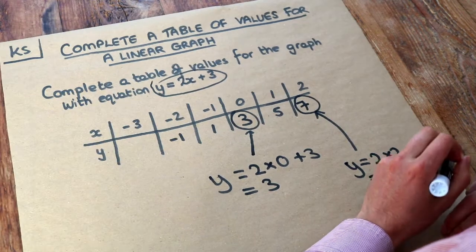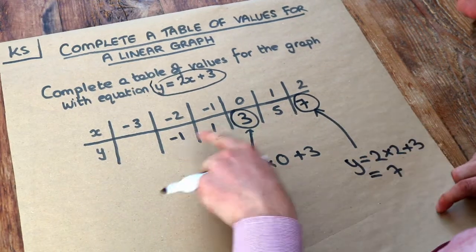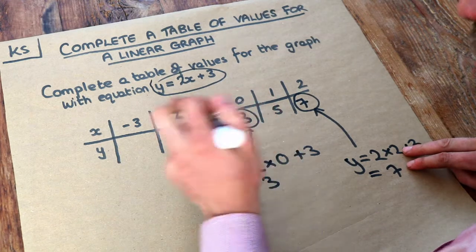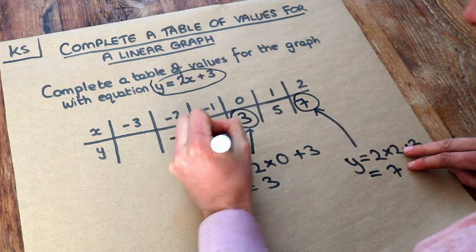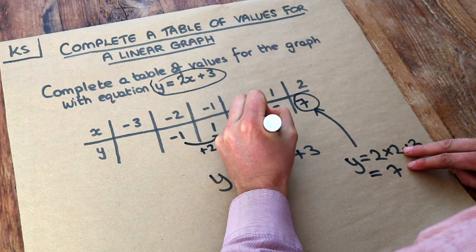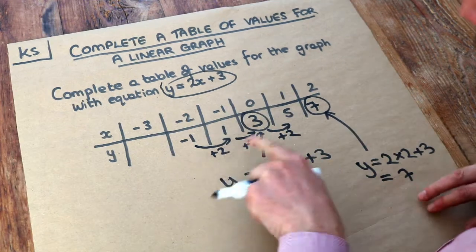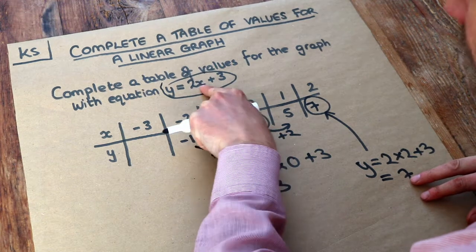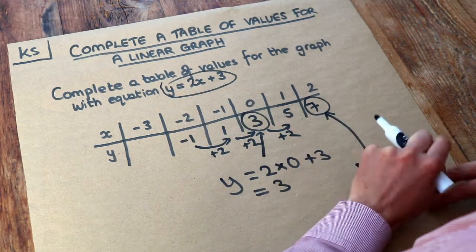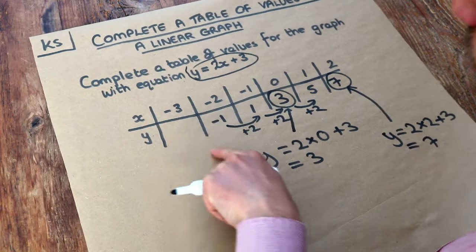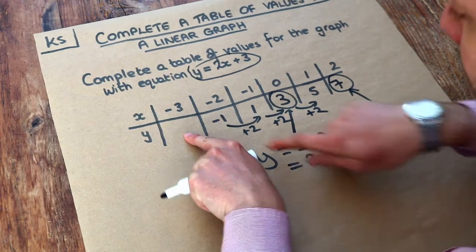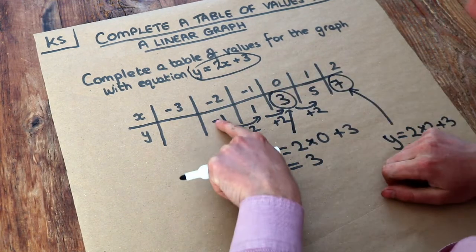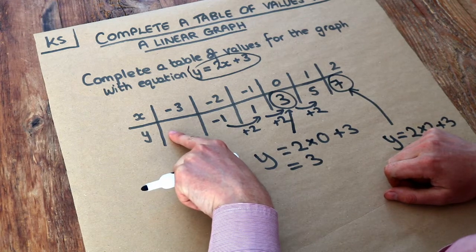Now you might have spotted a pattern by this point. Can you see the y values are going up by 2 each time? Plus 2, plus 2, plus 2. In general, whatever it's going up by will be the number in front of the x. So if it's 2x, then these numbers are going to go up by 2 each time. We could therefore work out this value without having to substitute -3 into this. If we go down by 2, we can see it's -3.